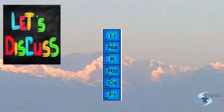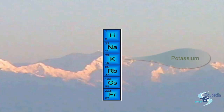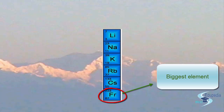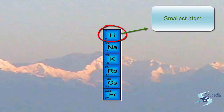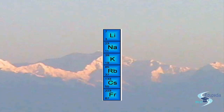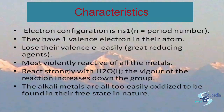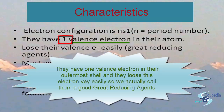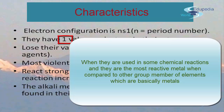Lithium is the smallest element in this group and francium is the biggest — atomic size increases as we move down the group. The electron configuration of this group is ns1, meaning they have one valence electron in their outermost shell. They lose this valence electron very easily, so we call them great reducing agents when used in chemical reactions.